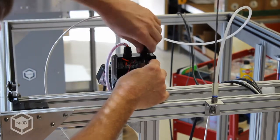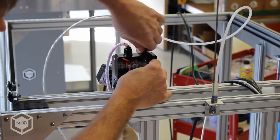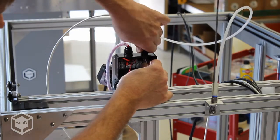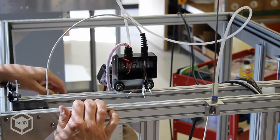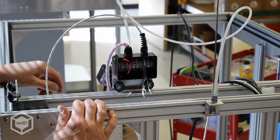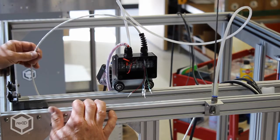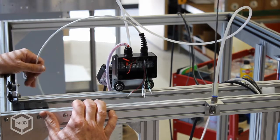And when you tighten it down, it's actually going to crimp the insulation of the head cable down so it actually stays in place and you can't pull it out. So that's the installation of the head cable to the terminal box.